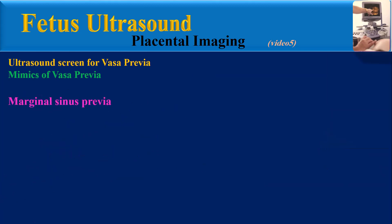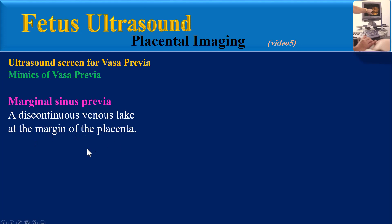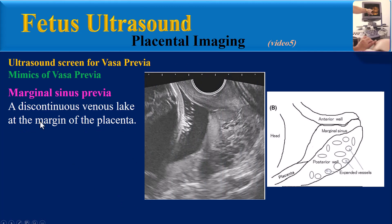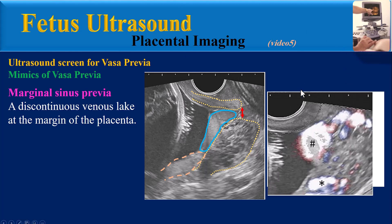Another mimic is marginal sinus previa — a discontinuous venous lake at the margin of the placenta. In this transvaginal image and schematic view, the cervix is open and the placental parenchyma is low-lying. The placental marginal sinus descends through the open cervix to the external os, and vessels at the posterior cervix are expanded. The color image shows blood flow within the marginal sinus and also within the expanded vessels at the posterior cervix, but there is no blood flow connection between the two.